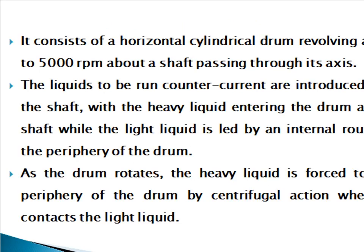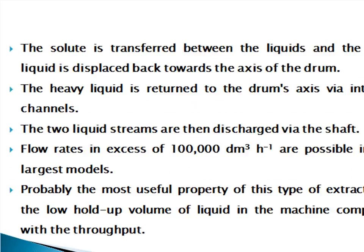The Podbielniak extractor consists of a horizontal cylindrical drum revolving at up to 5000 rpm about a shaft passing through its axis. The liquids to be run counter-current are introduced into the shaft, with the heavy liquid entering the drum at the shaft while the light liquid is led by an internal route to the periphery. As the drum rotates, the heavy liquid is forced to the periphery by centrifugal action where it contacts the light liquid. The solute is transferred between the liquids, and the light liquid is displaced back toward the axis. The heavy liquid is returned to the drum's axis via internal channels, and the two liquid streams are then discharged via the shaft.